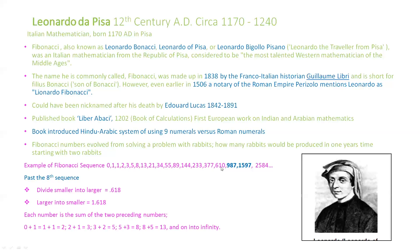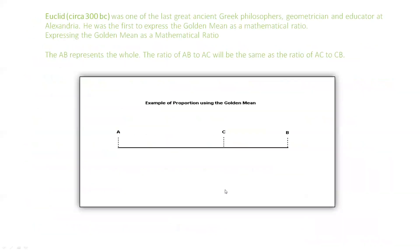You can see in this short illustration how far up these numbers get. Now, where we get what's referred to as the golden mean or golden ratio is: once you get past the eighth number in the sequence, if you divide the smaller number into the larger you get 0.618, and if you divide the larger into the smaller you get 1.618. I've highlighted two numbers here so you can verify these ratios yourself.